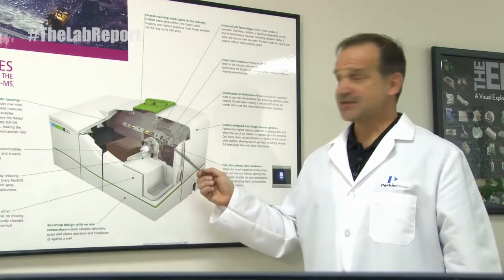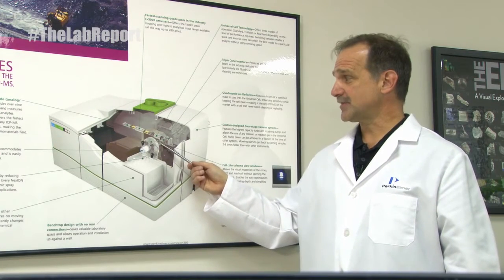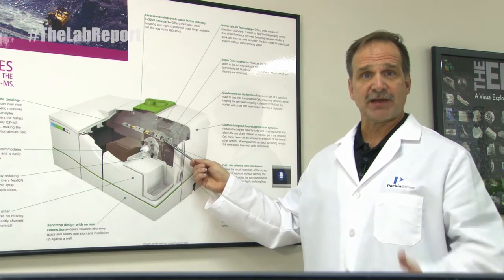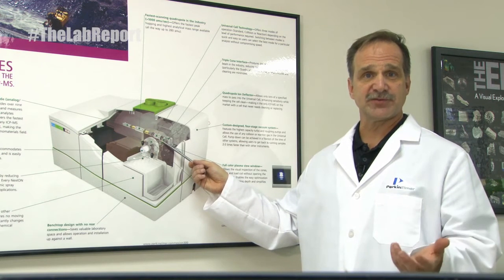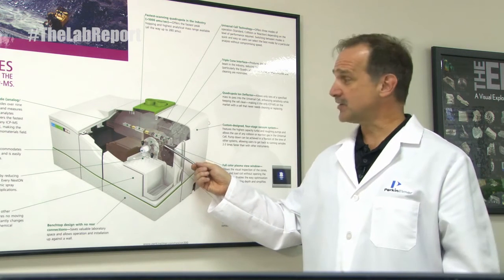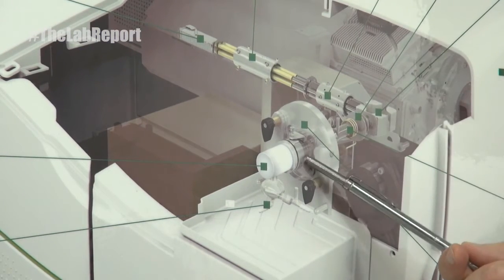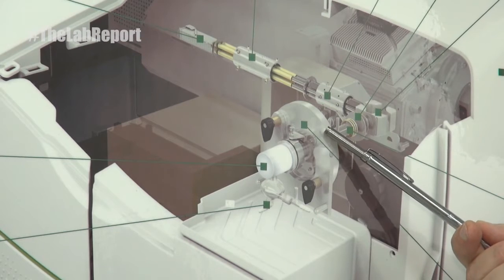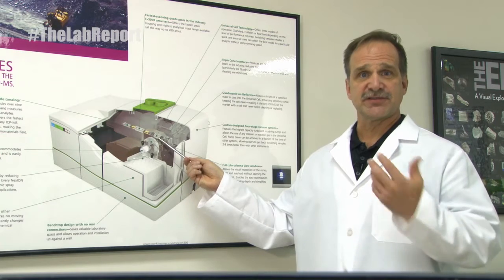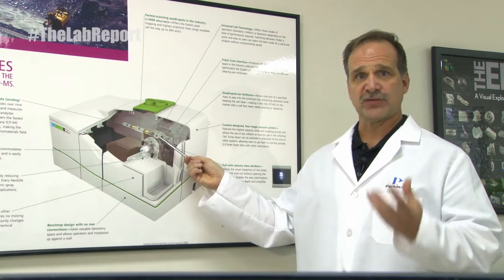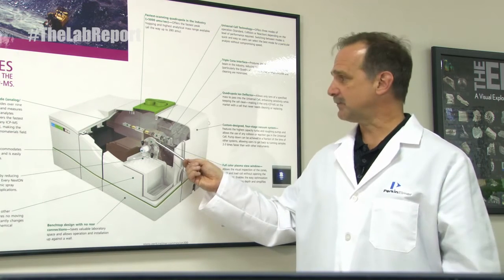After the sample has gone into the plasma, which sits right here, everything's ionized — the elements of interest are ionized — and those ions then pass through the cones. The Nexion uses a series of three cones: a sampler, a skimmer, and a hyperskimmer cone to focus the ions into a beam.